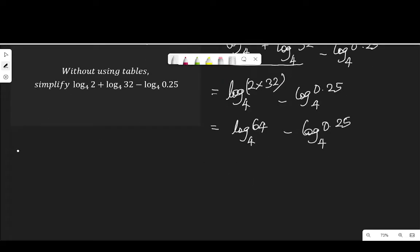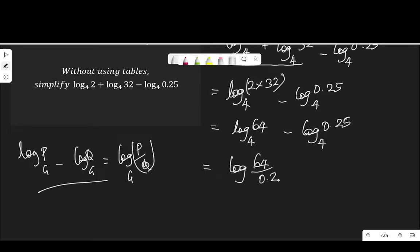Again there is a log rule that says log p to base a minus log q to base a equals log(p divided by q) to base a. So if I apply this, log₄(64) - log₄(0.25) becomes log₄(64/0.25), and 64 divided by 0.25 is 256.